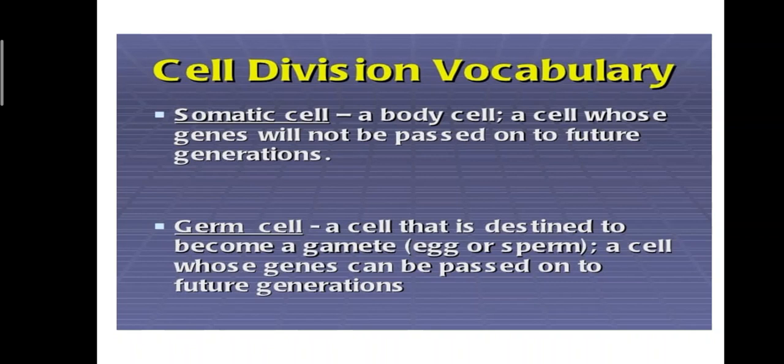A somatic cell, a body cell, a cell which genes will not be passed on to future generations. Whereas, germ cells, a cell that is destined to become a gamete, egg or sperm, a cell which genes can be passed on to future generations.